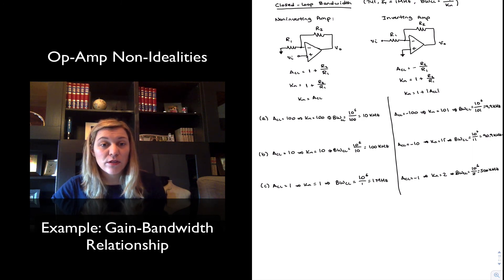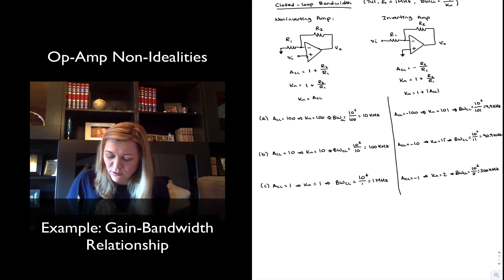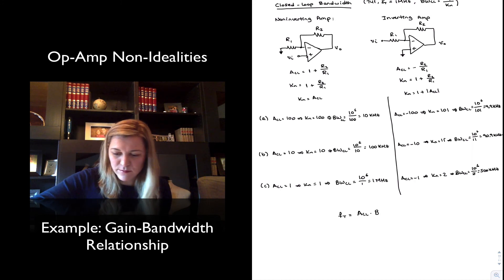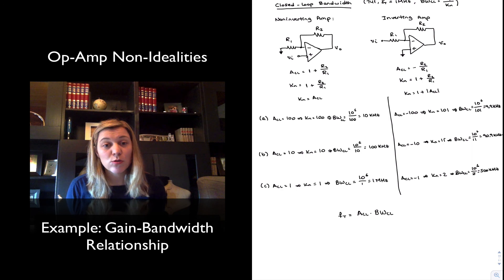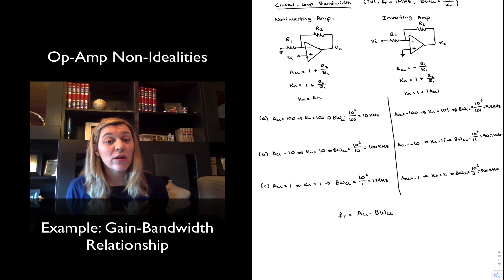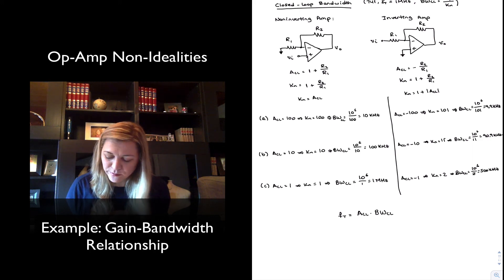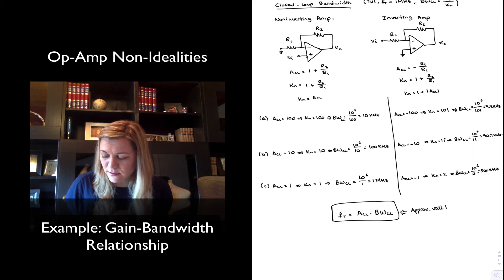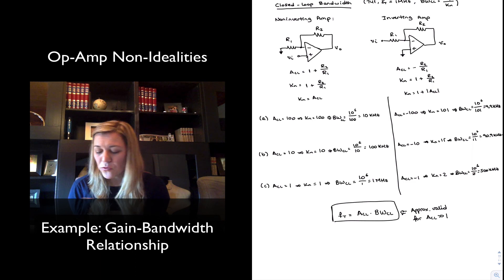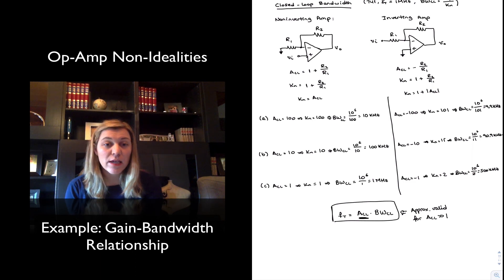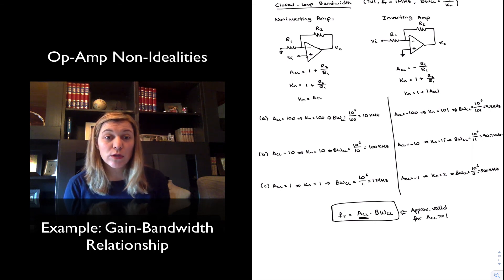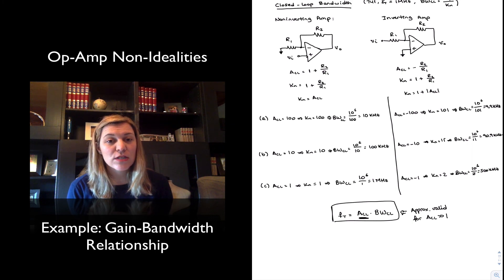Also note that if you use the approximate expression — unity gain frequency equals closed-loop signal gain times closed-loop bandwidth — as long as the closed-loop gain is high, you're not incurring a large error. But as the gain decreases, you make more error by using the signal gain instead of the noise gain. This approximation is valid only when ACL is much greater than 1; otherwise you need to replace the signal gain with the noise gain. Next, we'll look at other things affected by bandwidth, such as rise time.